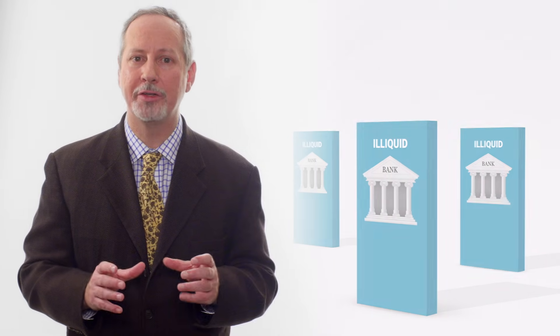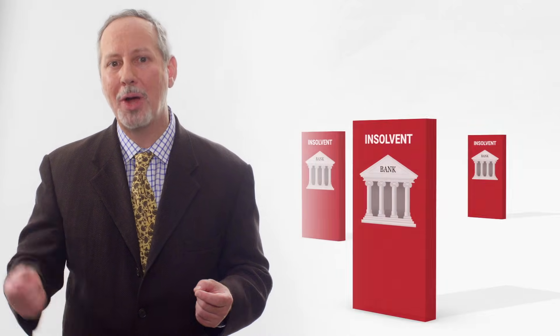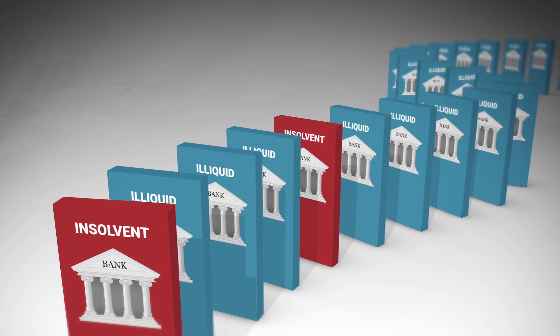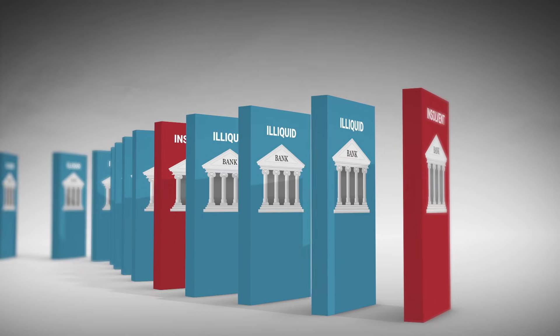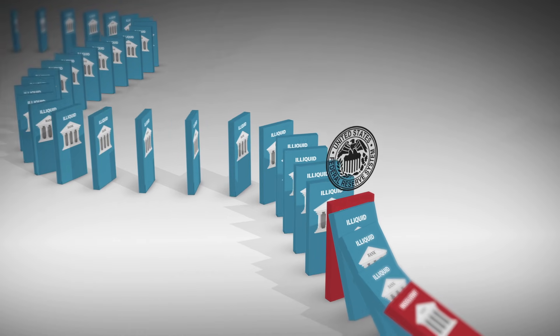Traditionally, the Fed lent to solvent but illiquid banks to get them through a temporary squeeze, and it wound down insolvent banks. But in a panic, the Fed may also have to lend to insolvent banks — it may have to bail them out. The problem in a panic is the problem of systemic risk: if one financial institution goes down, it's likely to take others with it, like dominoes. The bankruptcy of one insolvent financial intermediary could take illiquid but solvent institutions down with it. So the Fed sometimes has to bail out some insolvent banks in order to protect the entire system.